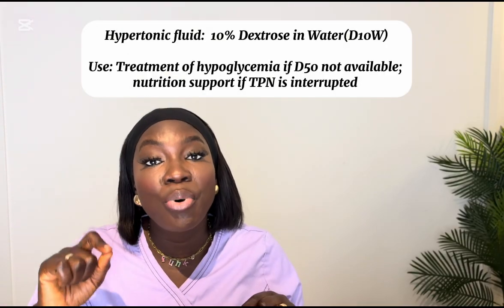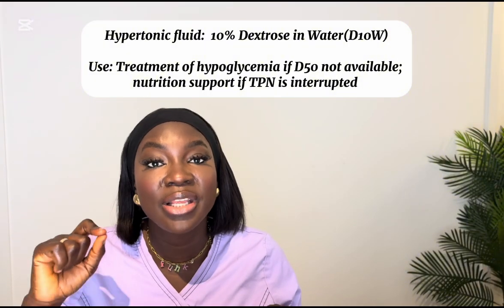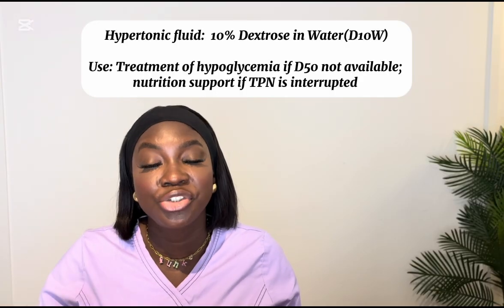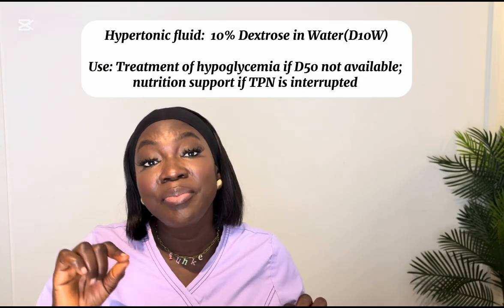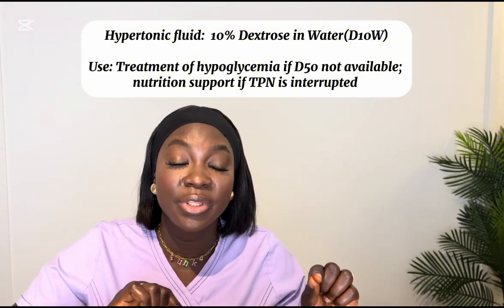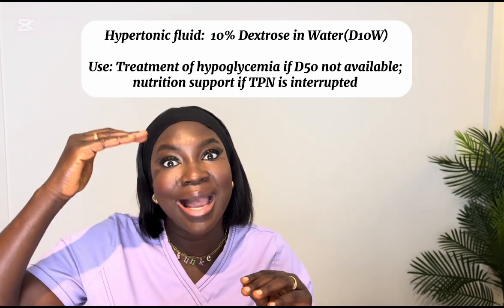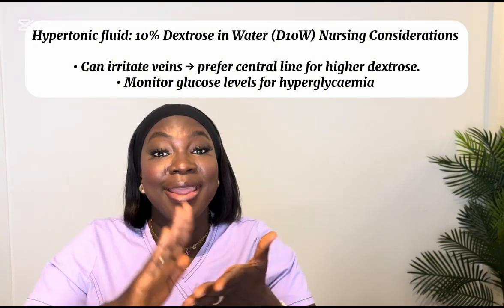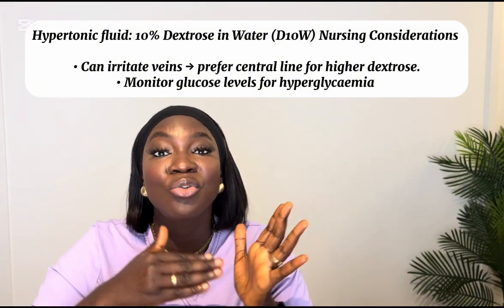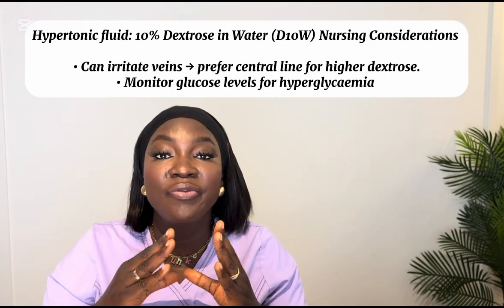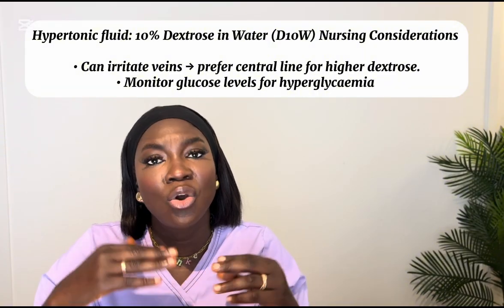The last hypertonic fluid is 10% dextrose in water. It is used to treat hypoglycemia if D50 is not available, and as nutrition support if TPN (total parenteral nutrition) is interrupted. Because it contains high sugar, monitor glucose levels and signs of hyperglycemia. Also ensure it is infused through a central line, not a peripheral line, as it is very harsh on the veins.